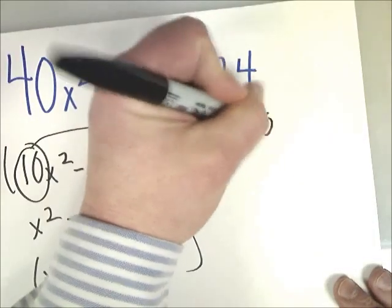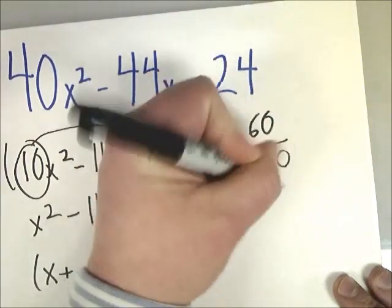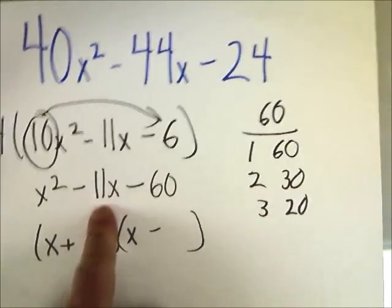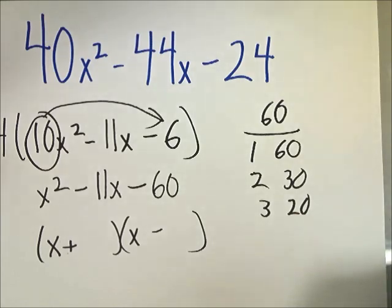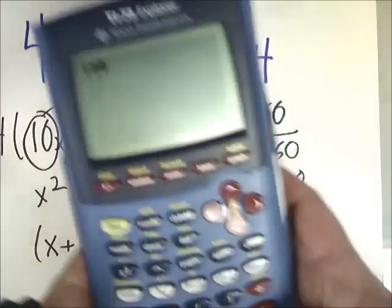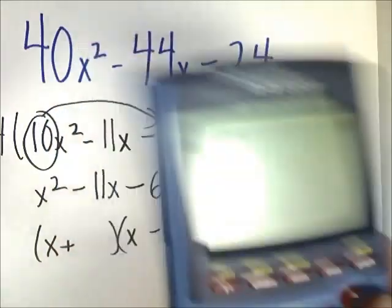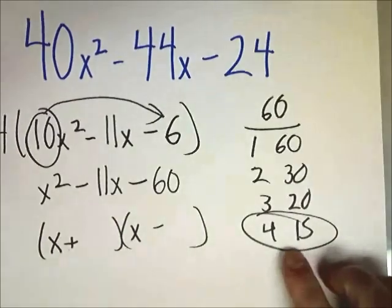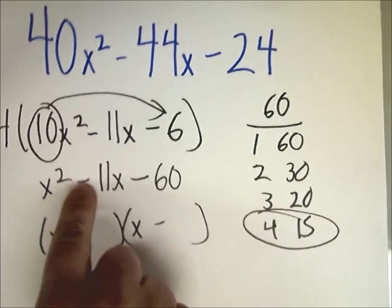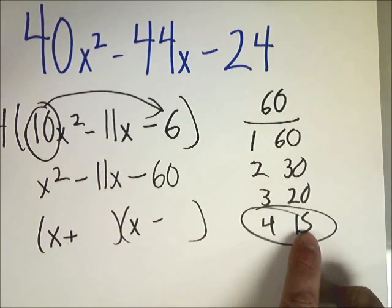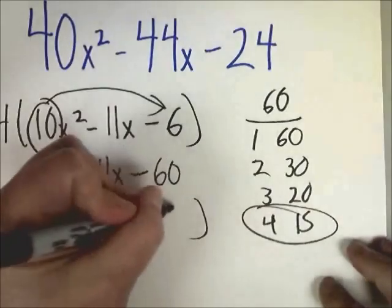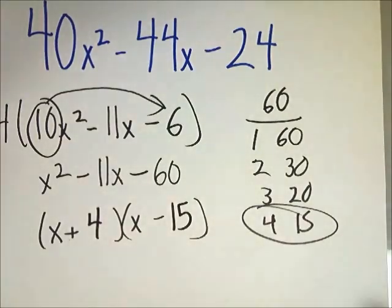So let's make a factor list for 60. 1 and 60, of course. 2 and 30. 3 and 20. Now I'm thinking in my head already. These are different. Can I subtract and get 11? Not yet. 4 and 15. Oh, wait a minute. 15 minus 4 does give me the 11 I'm looking for. So this is going to be my factor set that I'm going to use. Now, I have to be smart. This is negative 11x. So since this is negative, the bigger number goes behind the minus. Because like I said, I want to do negative 15 plus 4 and that will give me the negative 11 I want. So this looks like this.